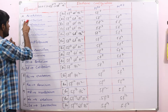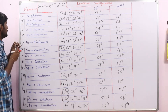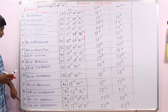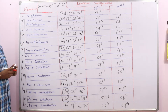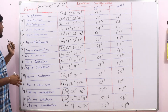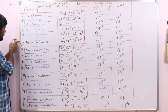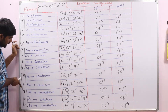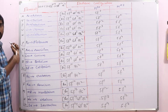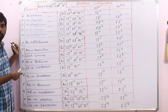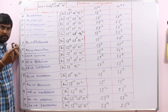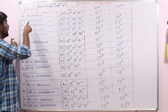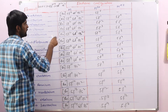This is the code to remember the 14 actinoids. Already we discussed: Th, Pa, U, Np, Pu, Am, Cm, Bk, Cf, Es, Fm, Md, No, Lr.